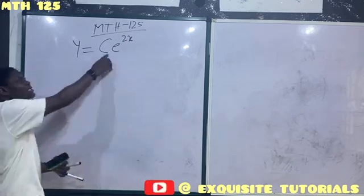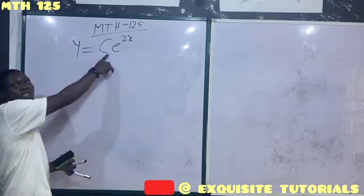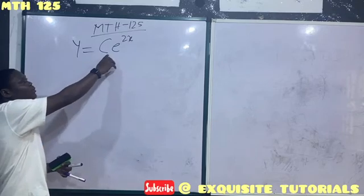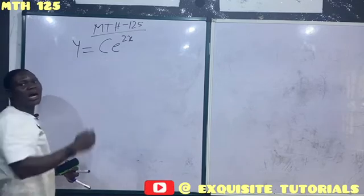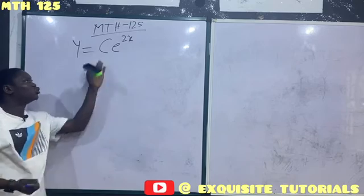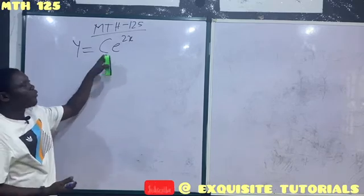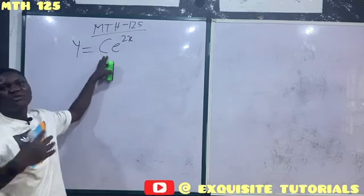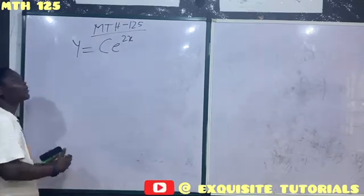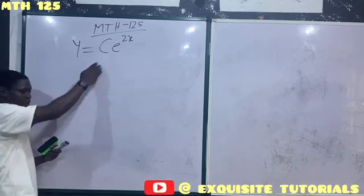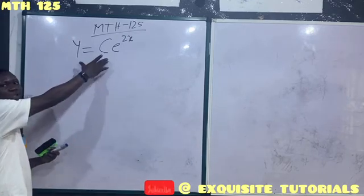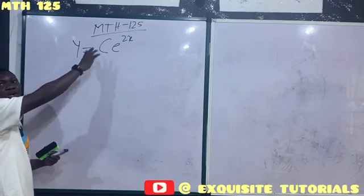Because c here is what we call an arbitrary constant, an arbitrary constant has infinite values. C could be 1, c could be 3, c could be 4 — as many values as possible. When we have such an arbitrary constant, we tend to call that solution a general solution.